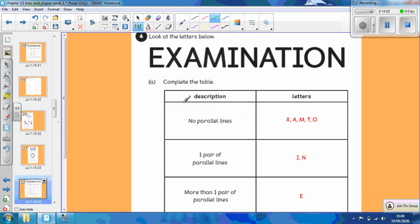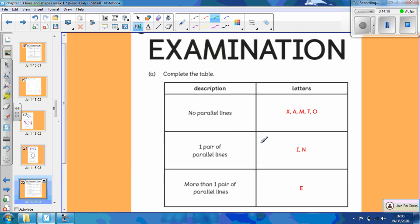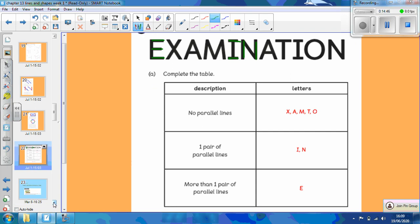Finally then, look at the letters below. We've got examination: no parallel lines X, A, M, T and O. One pair of parallel lines. Our parallel lines are here in the letter I, so that's one, and our parallel lines are here in the letter N. So I and N have one pair of parallel lines. More than one pair of parallel lines. Well, E here has got a set of three parallel lines, so that's a pair and that's a pair, so it's got two pairs of parallel lines. We've come to the end of our worksheet. We've come to the end of our learning today. I hope you enjoyed that. I hope you're looking forward to next lesson where we will, in fact, be talking about vertical and horizontal.